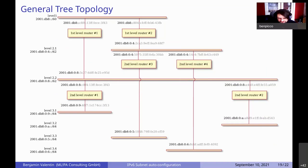DHCPv6 also doesn't give you routing. Thank you very much — very interesting.